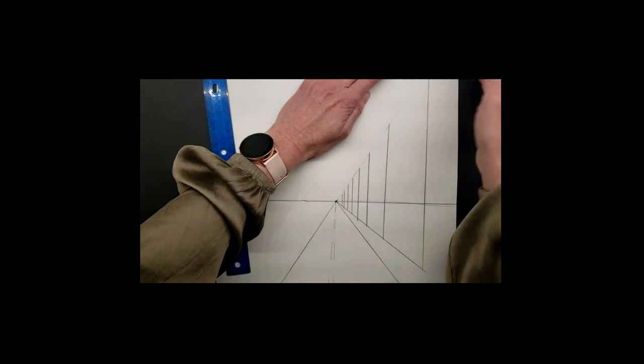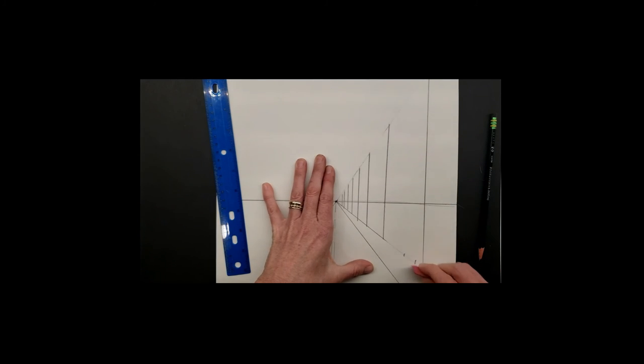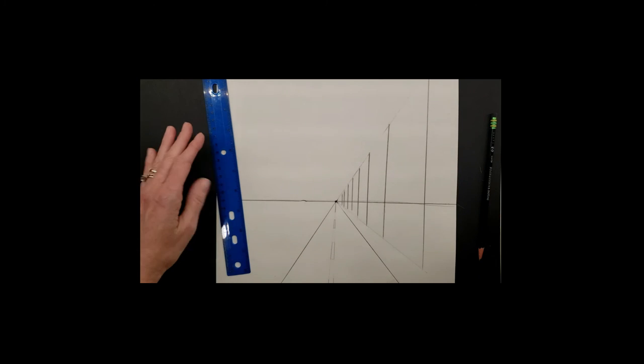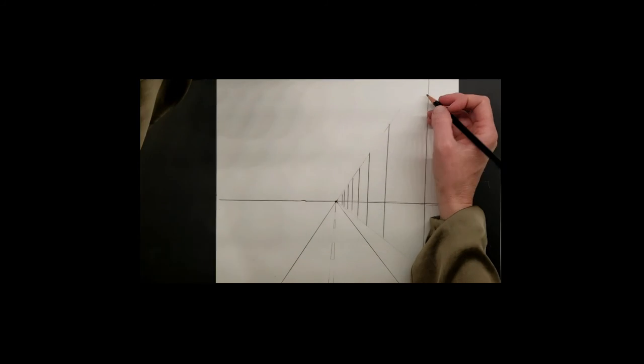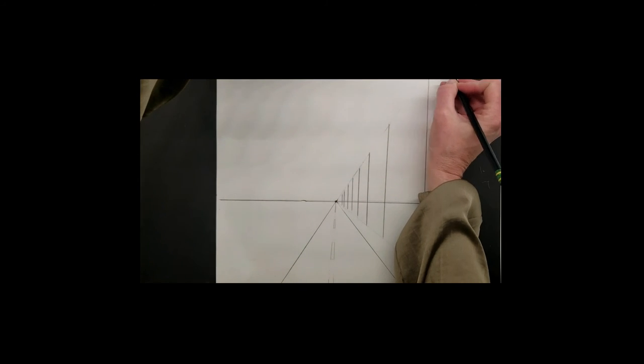We can erase these guidelines that we added. We don't need those there. Hopefully you drew a little more lightly than I did. Mine are not going to erase super well. And we can see it now. It looks like we have telephone poles standing beside our road.